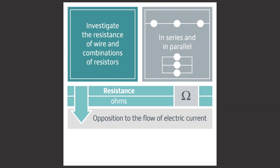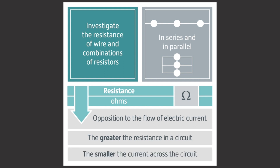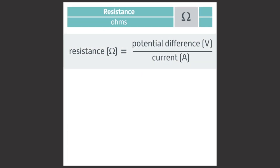Resistance is the opposition to the flow of electric current. The greater the resistance in a circuit, the smaller the current for a given potential difference across the circuit. Resistance is measured in ohms, which uses the symbol of a capital Greek omega. The formula to calculate resistance is: resistance equals potential difference in volts divided by current in amps. In symbols, this is R equals V divided by I.